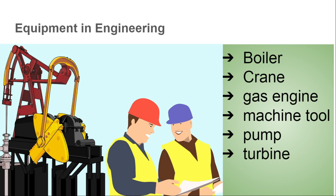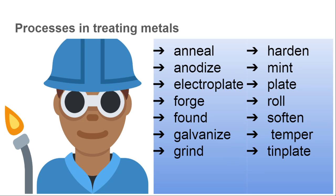Equipment in engineering includes: boiler, crane, gas engine, machine tool, pump, and turbine. Processes in treating metals include: anneal, anodize, electroplate, forge, found, galvanize, grind, harden, coal mine, mint, plate, roll, soften, temper, and tin plate.